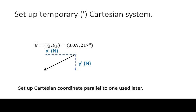In this strategy, we set up an intermediate coordinate system designated by a single apostrophe, referred to as prime, that must still be parallel to our ultimate coordinate system.